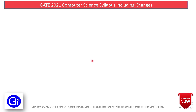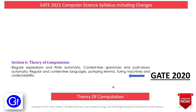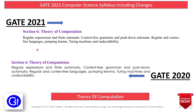The next subject is Theory of Computation. The GATE 2020 syllabus comprises Regular Expressions and Finite Automata, Context-free Grammars and Pushdown Automata, Regular and Context-free Languages, Pumping Lemma, Turing Machine, and Undecidability. There is no difference in the GATE 2021 syllabus, so no changes since GATE 2016.